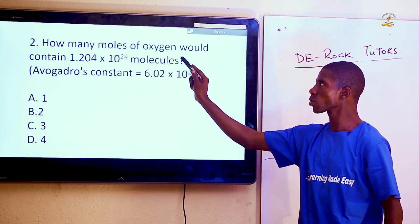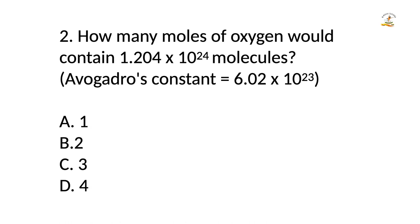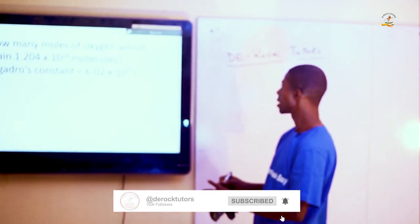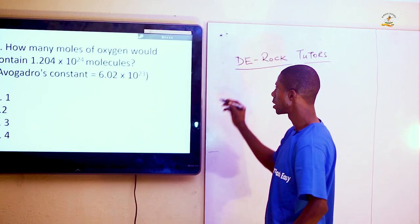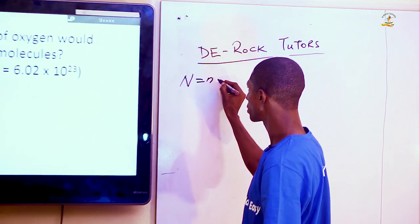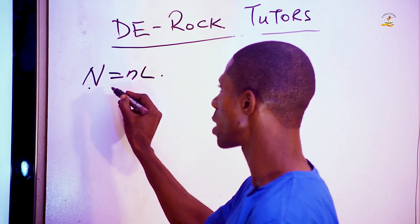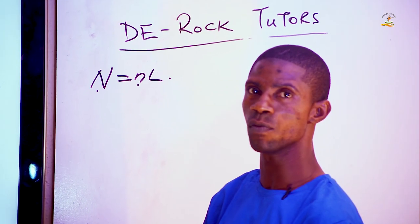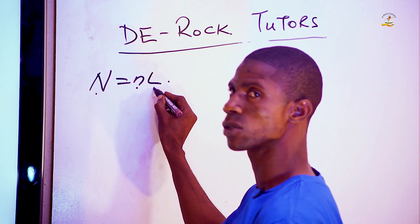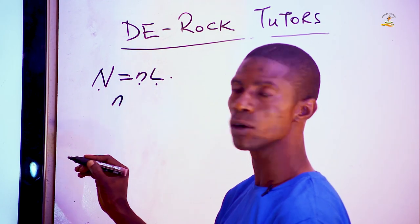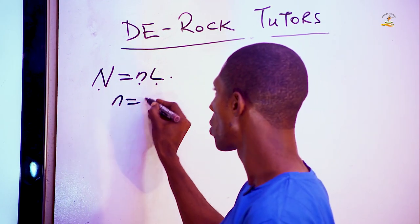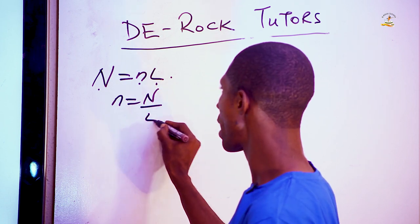How many moles of oxygen will contain 1.204 × 10²⁴ molecules? We are given Avogadro's constant as 6.02 × 10²³. We need the formula where N = nL, where capital N is the number of particles, small n is the number of moles, and L is Avogadro's constant. Making n the subject, we have n = N over L.